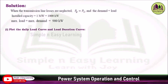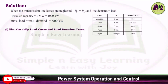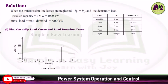First, plot the daily load curve and load duration curve. From the given table you can plot the load curve. The maximum value is 900 kilowatt. Take a scale on the y-axis up to 900, and on the x-axis the time represents one day, midnight to midnight, so 0 to 24 hours. From midnight to 5 a.m. it is 100 kilowatt, so 0 to 5 it is 100 kilowatt.